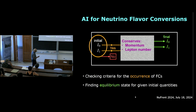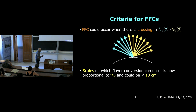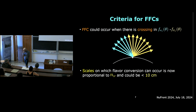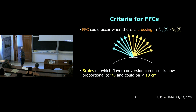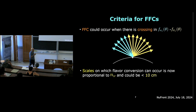Fast flavor conversions occur if there is a crossing in the angular distributions of electron neutrinos and electron anti-neutrinos, assuming nu_x and nu_x-bar have similar distributions. This means that for some range of angle, electron neutrinos are dominant, and for another range electron anti-neutrinos are dominant. If this happens, fast flavor conversion exists and can occur on a scale determined by the neutrino number density, which could be very small near the neutrino decoupling region.